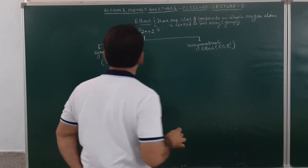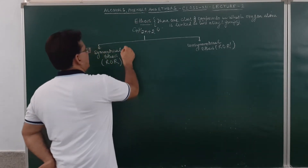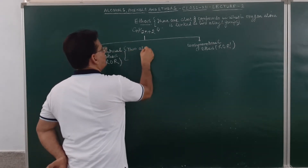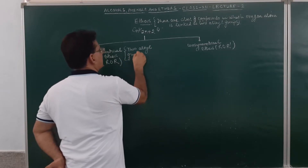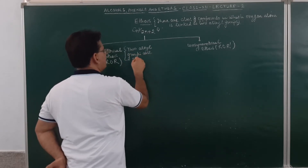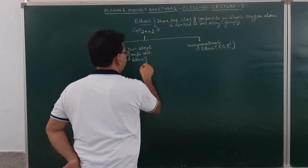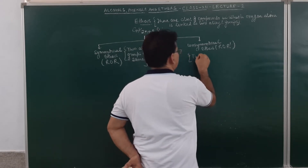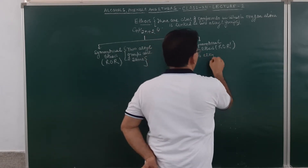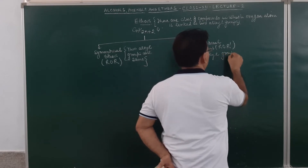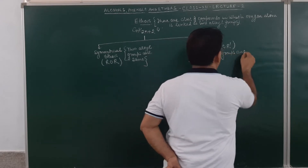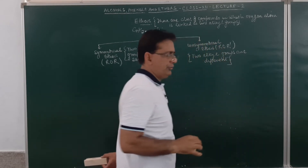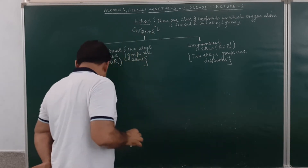When I talk about symmetrical ethers, the two alkyl groups are the same. When we talk about unsymmetrical ethers, the two alkyl groups are different — the alkyl groups may be same or the alkyl groups may be different.